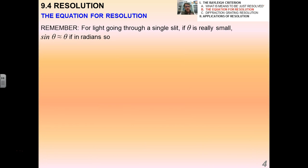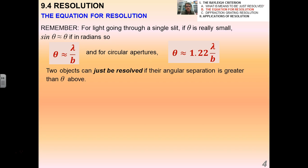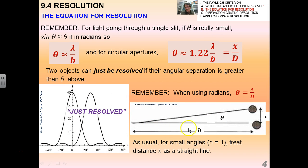Now I'm going to come up with an equation for resolution. If you remember for light going through a single slit, if theta was really small we said that sine theta equals theta in radians. So we have these two situations: lambda over b and 1.22 lambda over b. We're going to equate both of these as approximately equal. Two objects can just be resolved if their angular separation is greater than theta. Now remember when using radians, we make a diagram here where we have the big D being the distance between the objects and the actual slits or camera or eyeball, and then x would be here. For small angles where n equals 1, we're going to treat distance as a straight line, and high resolving power means the smallest possible theta.